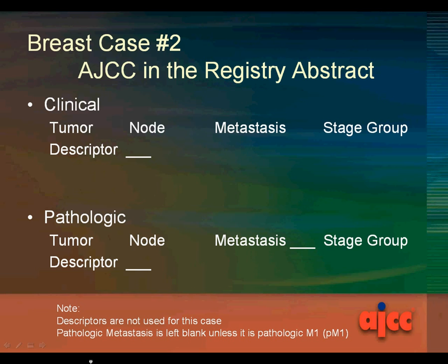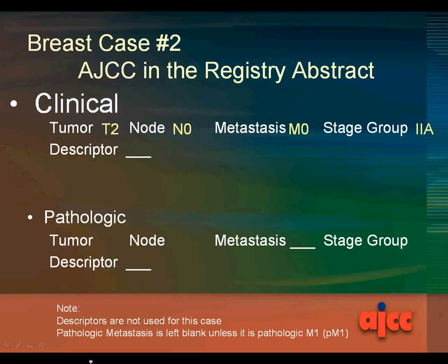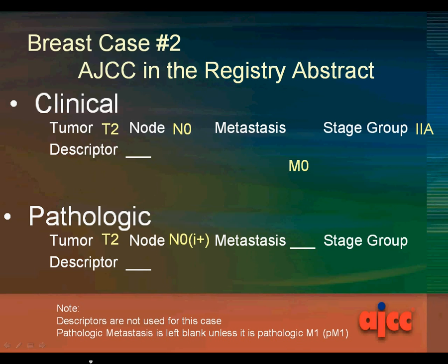This is how the AJCC staging is recorded in the Cancer Registry Abstract. For clinical staging, the tumor is T2, the node is N0, and the metastasis is M0 for a stage group of 2A. For pathologic staging, the tumor is T2, the node is N0(i+), and the metastasis should be recorded in the clinical line because it's a clinical M0, and it's a pathologic stage group 2A.